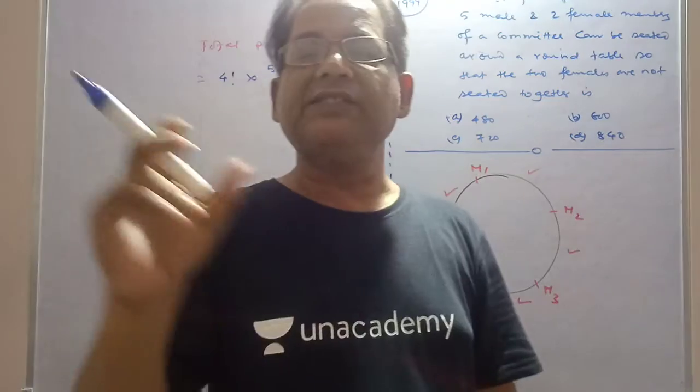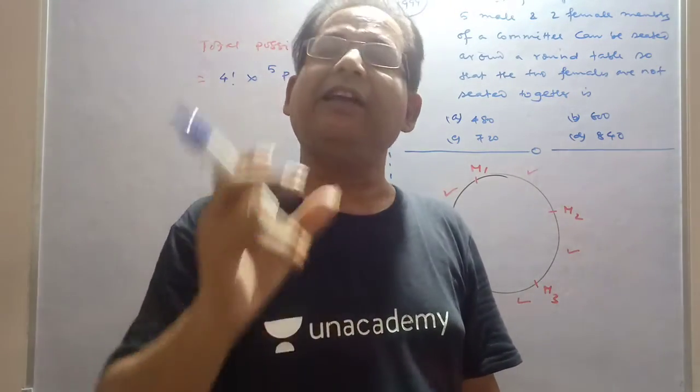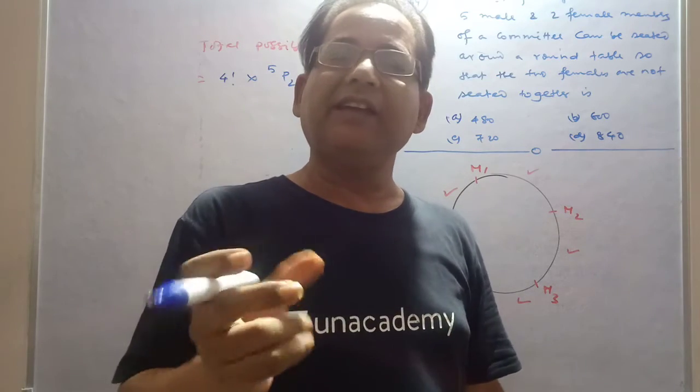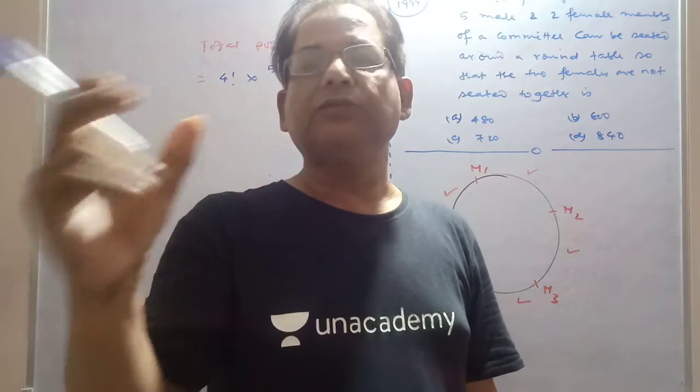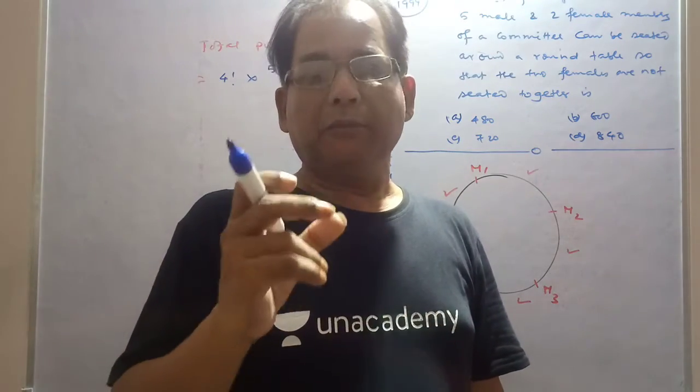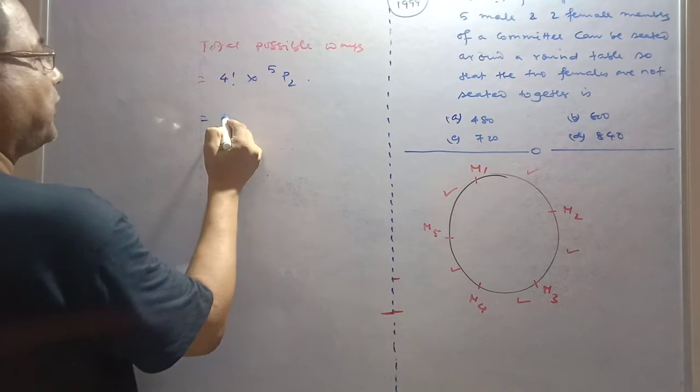See, n persons can be seated in a line in n factorial ways. N persons can be seated in a circle in n minus one factorial. Circular and round table are the same, so for n persons, their possible arrangement is n minus one factorial. So this is 4 factorial.